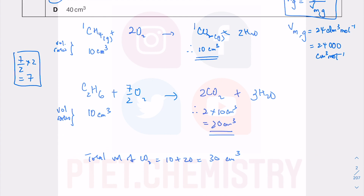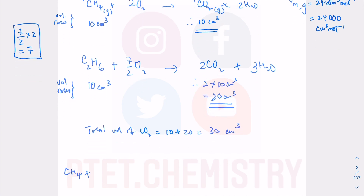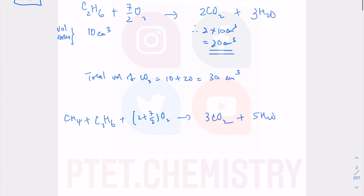There is another method: combining the two equations together gives CH₄ + C₂H₆ + (2 + 7/2)O₂ → 3CO₂ + 5H₂O, because you're burning a mixture. With 20 cm³ of mixed gas total, the mole ratio 1:3 gives 3 × 10 = 30 cm³ of CO₂.